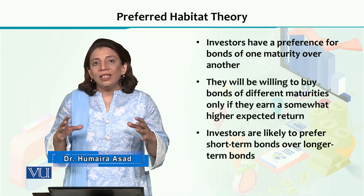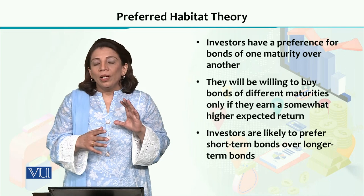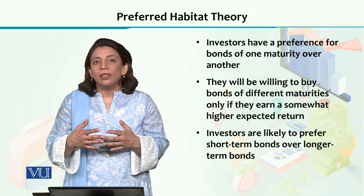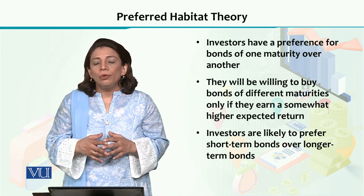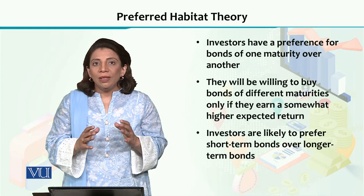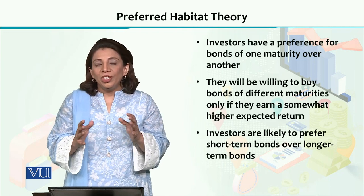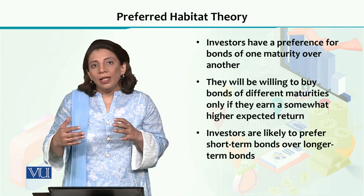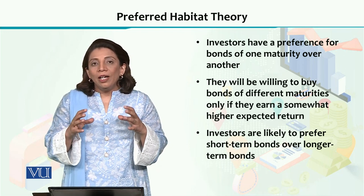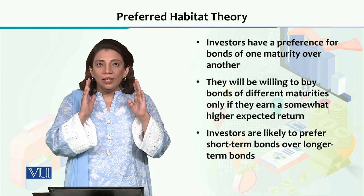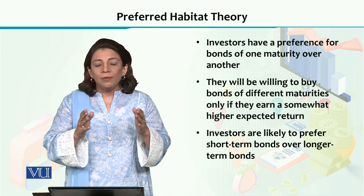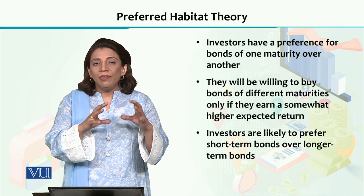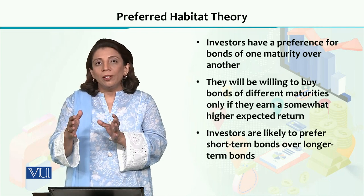Generally, it has been observed over the past many years that most people, being risk-averse, prefer to invest in short-term bonds. The preferred habitat theory explains that individuals have a certain preferred habitat — meaning they plan to invest in a specific bond with a specific maturity time.